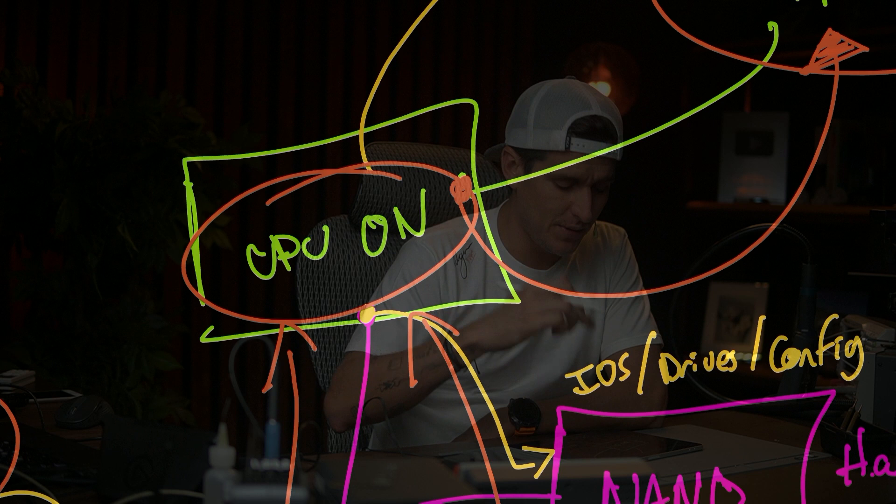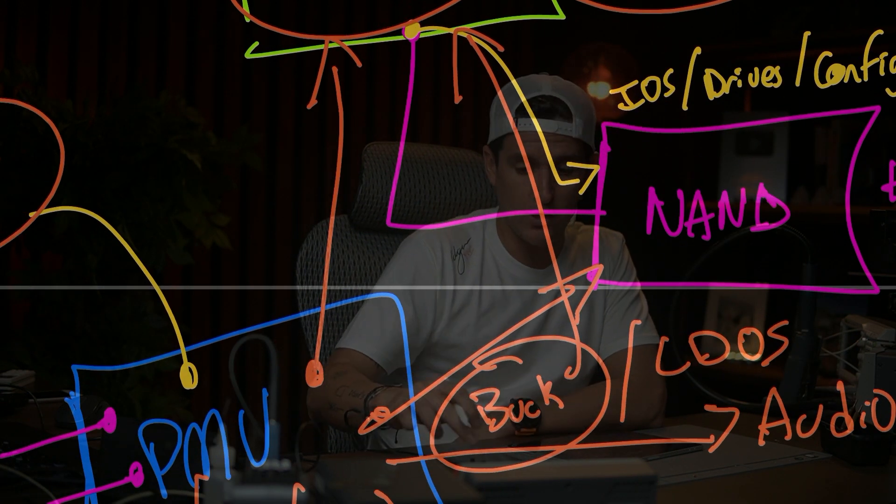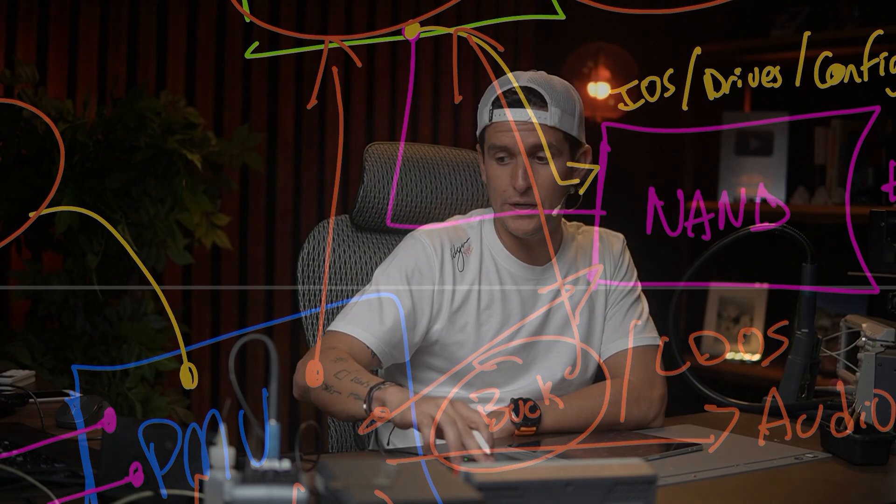If we have an apple logo, that means the CPU is on. To have the CPU on, we need the BUCKs. So because this phone has an apple logo, I know the BUCKs are working and the PMU is working fine. I don't need to go check the BUCKs — but remember one thing I taught you.